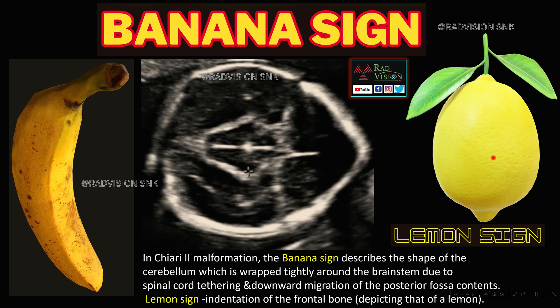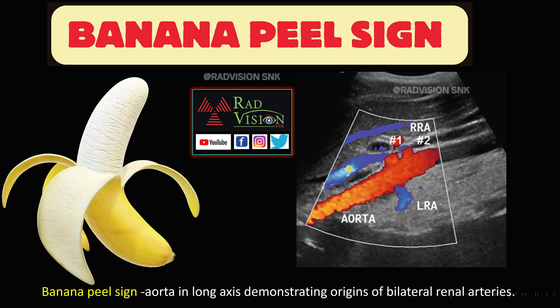This is the banana sign or lemon sign. The normal buttock-shaped configuration of the cerebellum is lost, and the cerebellum is wrapped around the brainstem with obliteration of the cisterna magna, resembling a banana. This occurs due to spinal cord tethering or downward migration of the posterior fossa contents, typically seen in Chiari 2 malformation. There is also constriction or indentation of the frontal bones making the lemon sign. The entire spine should be traced for spina bifida or meningocele to confirm the diagnosis of Chiari 2 malformation.